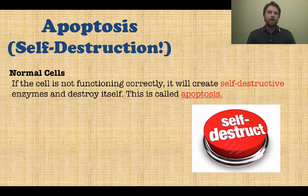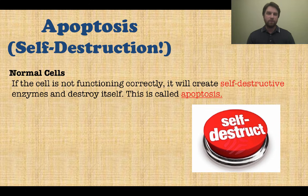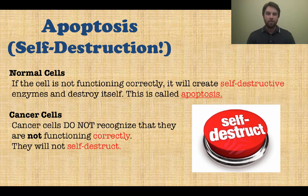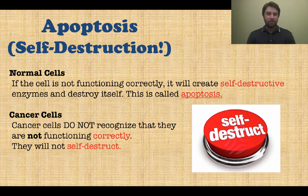Next we talk about apoptosis, which is self-destruction. Normal cells that aren't functioning correctly will create a self-destruct enzyme and destroy themselves — the cell essentially explodes, killing itself because it's not functioning properly. Cancer cells, however, do not recognize that they're not functioning correctly, so they don't activate their self-destruct mechanism. They just keep growing because they don't think anything is wrong, which is very bad and contributes to the creation of cancers.